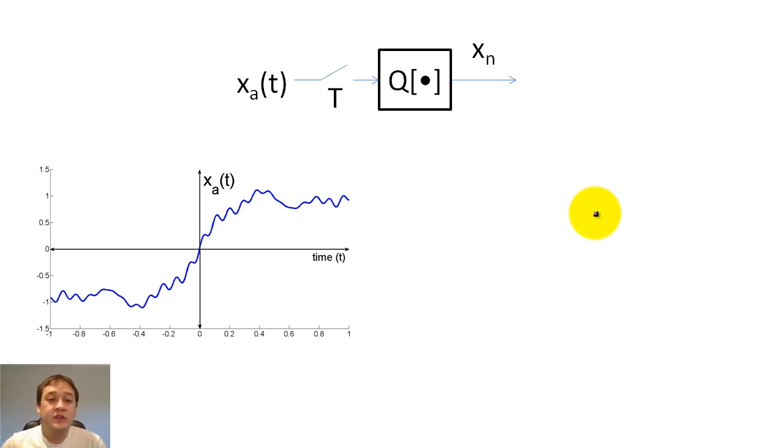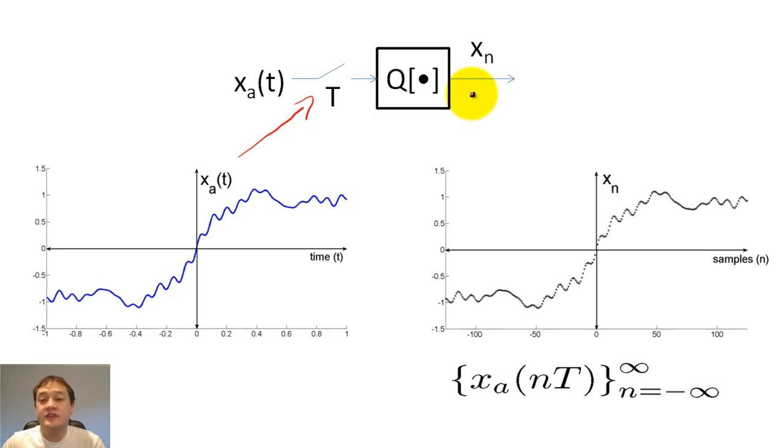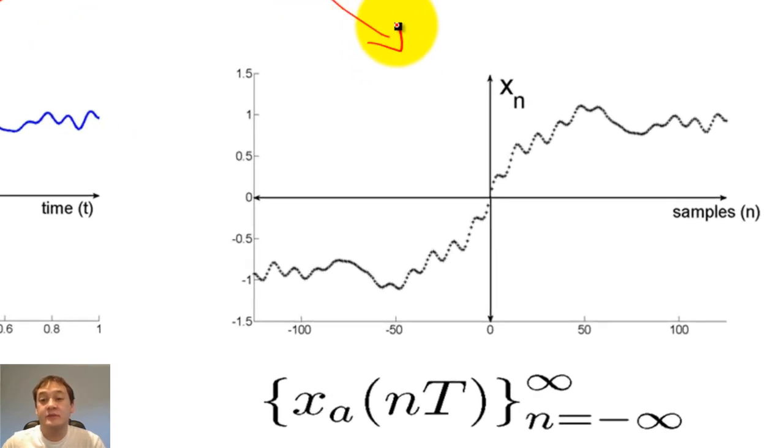First, we input the signal X_a(t), which has high and low frequencies, into the A to D converter. X_a(t) is sampled by the periodic switch and quantizer to create the digital signal X_n. X_n would then be stored in computer memory as a set of bits.